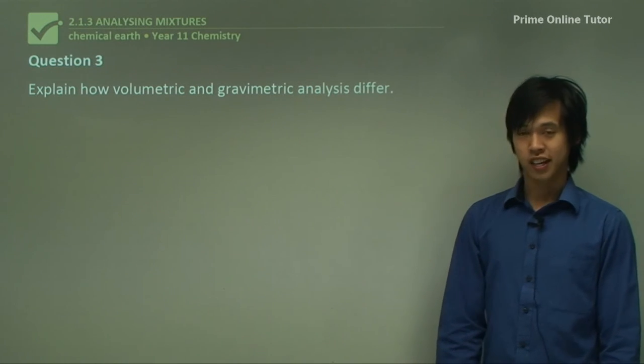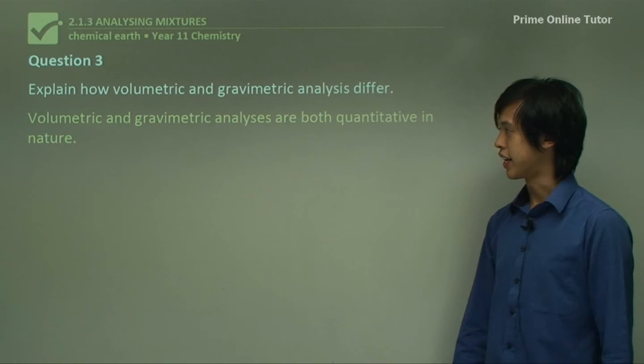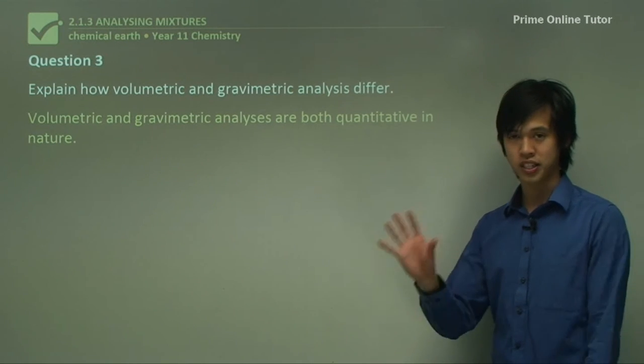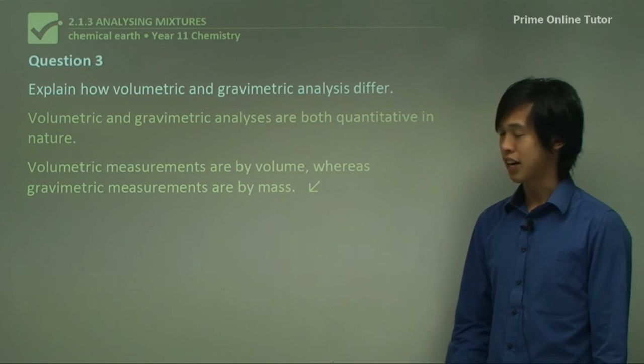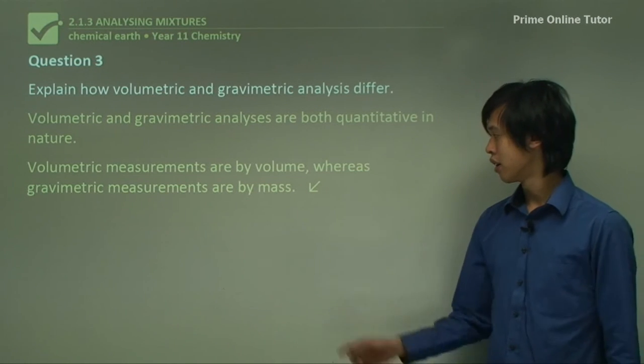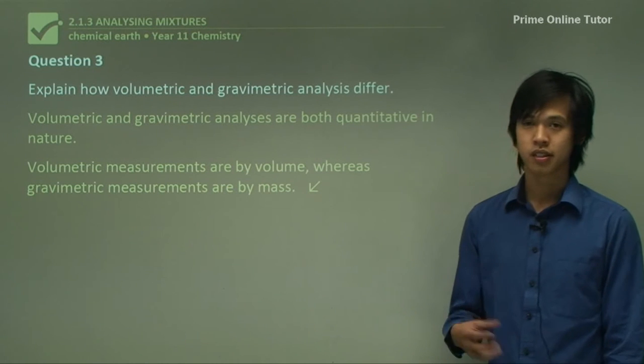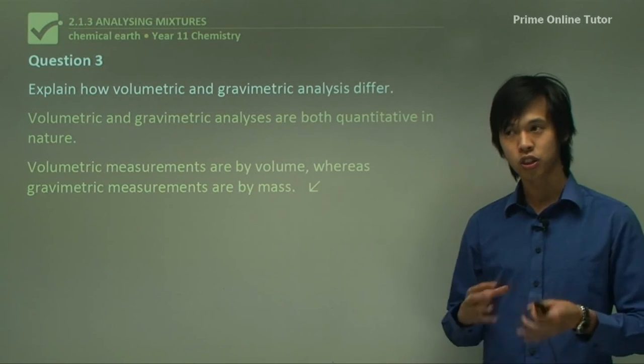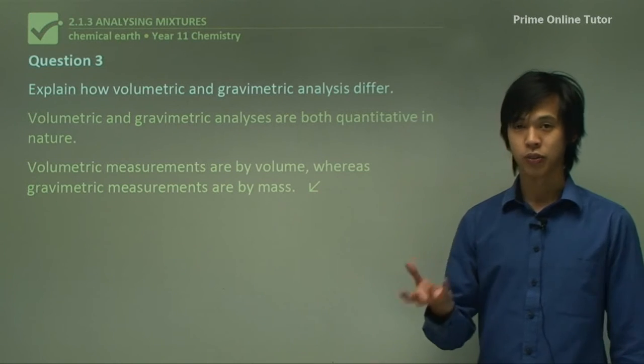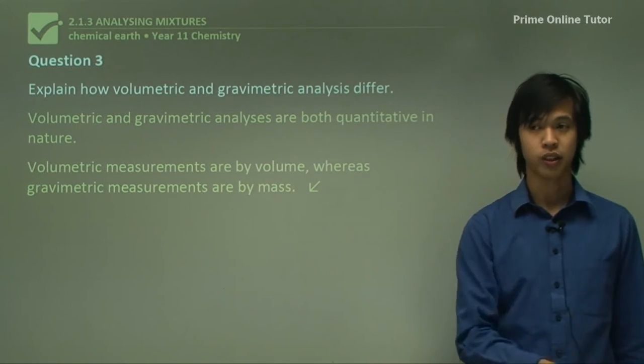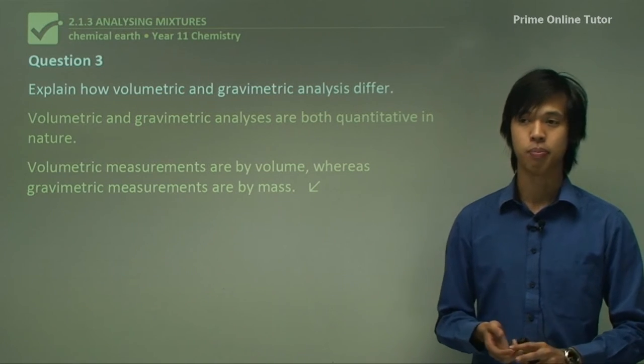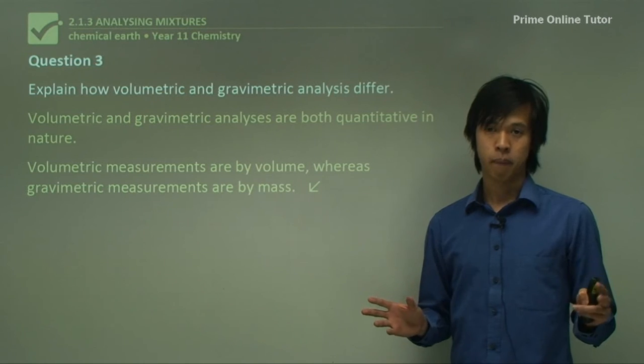Explain how volumetric and gravimetric analysis differ. Well, volumetric and gravimetric analysis are both quantitative. So that's not a difference. It's just something that we should understand. They're both quantitative measures of something. So volumetric measurements are by volume. So we actually are measuring a volume of a particular thing. So usually it's a volume of a solution. Whereas gravimetric analysis or gravimetric measurements are done by mass. So we're actually looking for the mass of something. Usually we find it by weighing something. But basically we're looking for the mass of a particular substance. Whereas in volumetric, we're looking for the volume of a particular substance. So there's two measurements that we can take. They're related, but they're not the same. So that's how they differ.